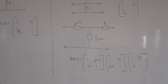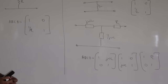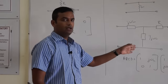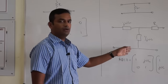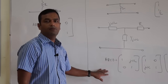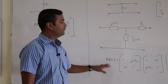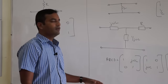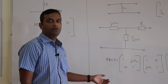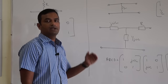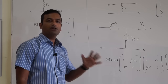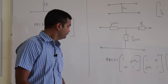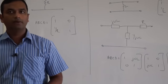As I said, whenever you have networks cascaded together, the best parameter to analyze such a network will be the ABCD parameters. We will stop here. In the next class, I will introduce you to what is called S parameters, which is the heart of any RF and microwave measurement. Thank you.